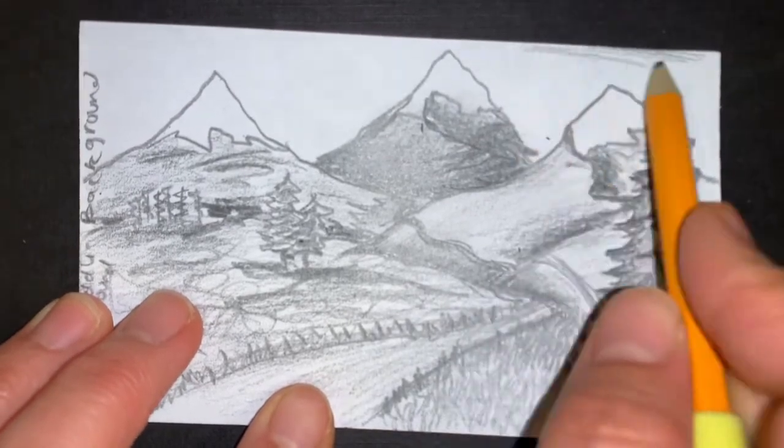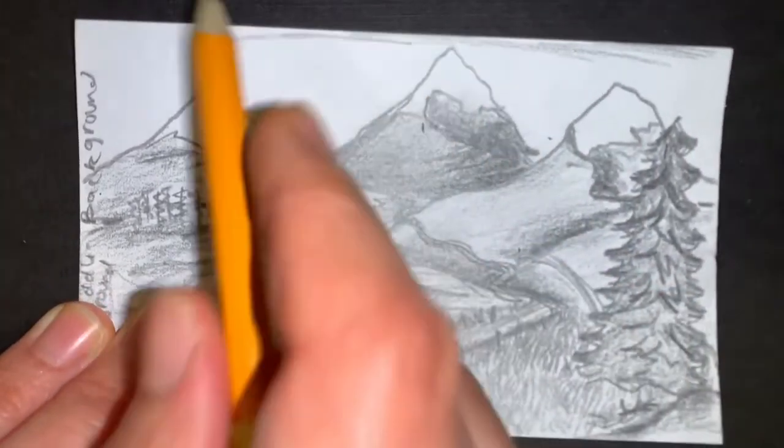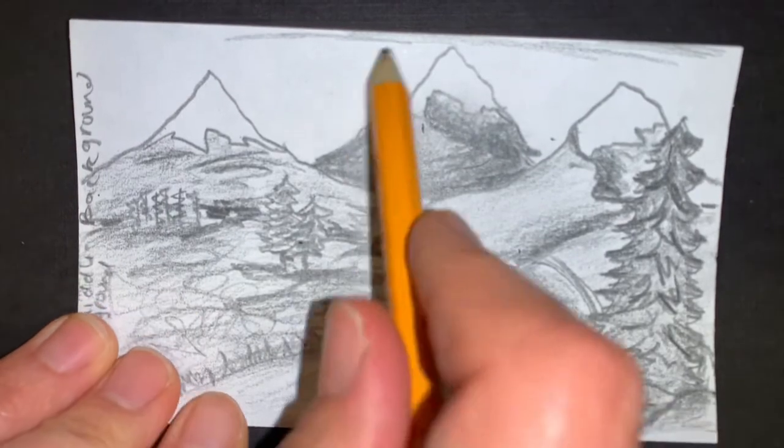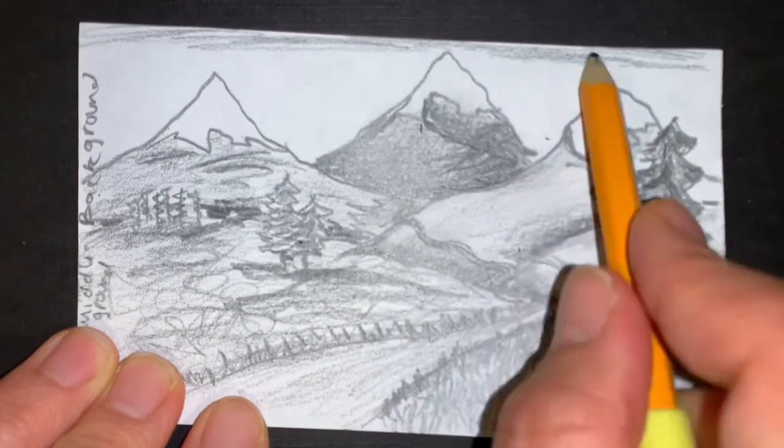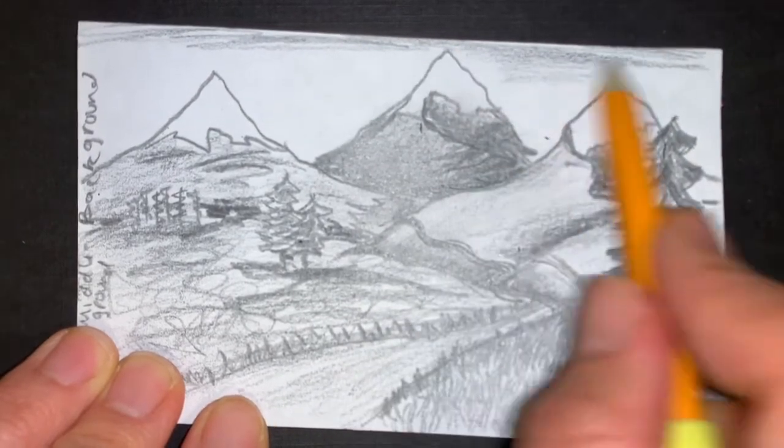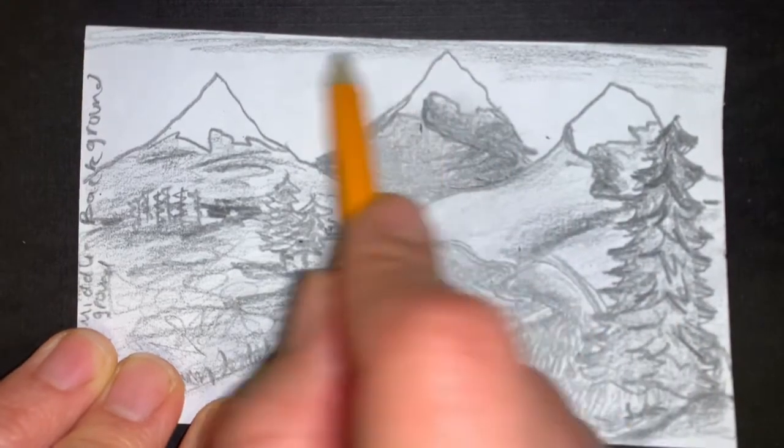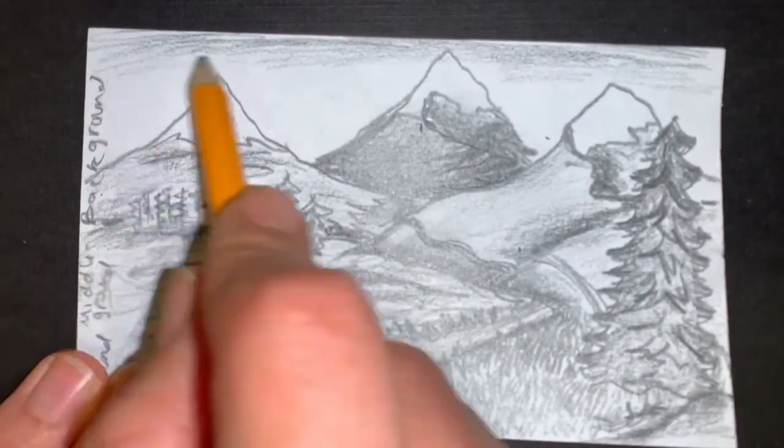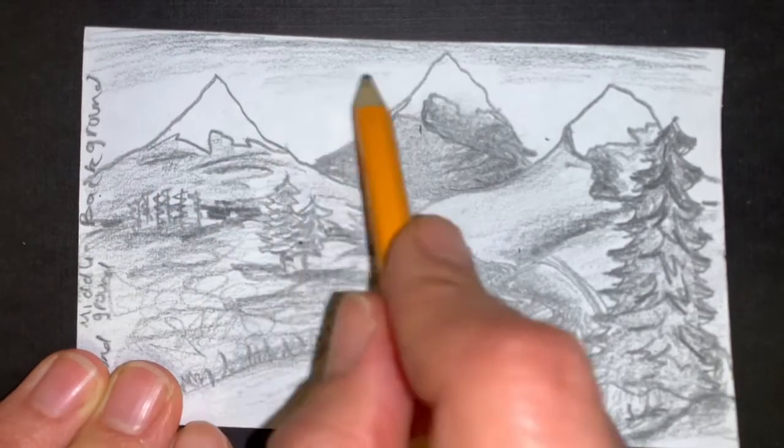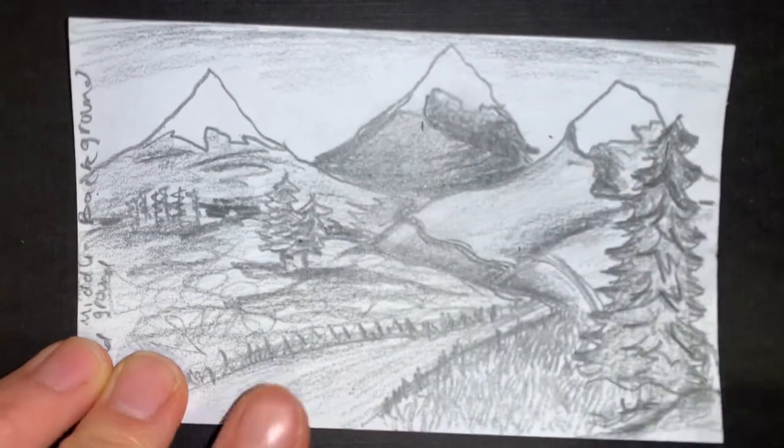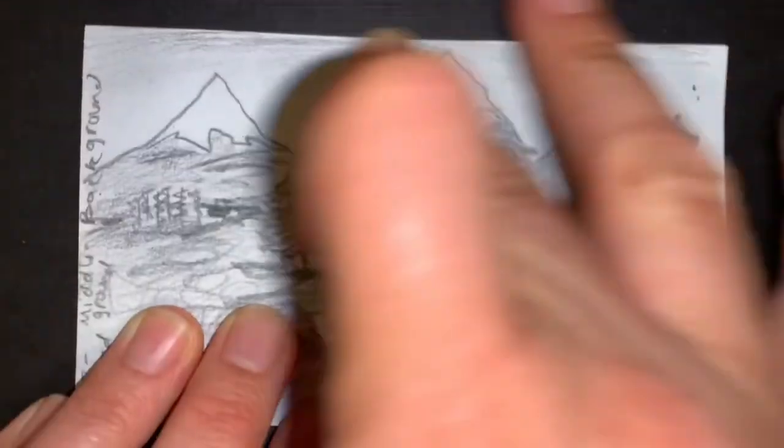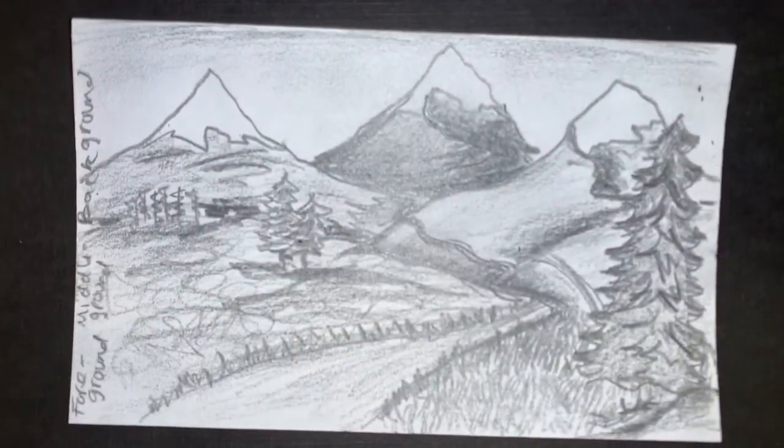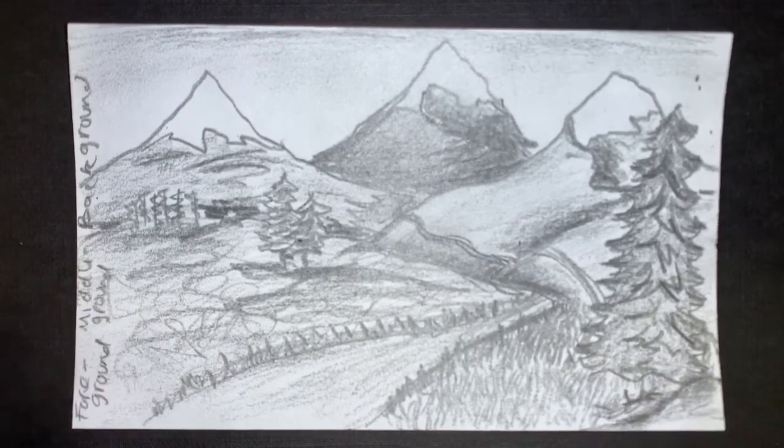And then blend to white. Because in the higher elevations, the sky tends to do that. It's dark, dark blue. And then as you get closer to the horizon, it gets wider. And you can use your finger to smudge it. And there we go. We've got a nice little drawing.